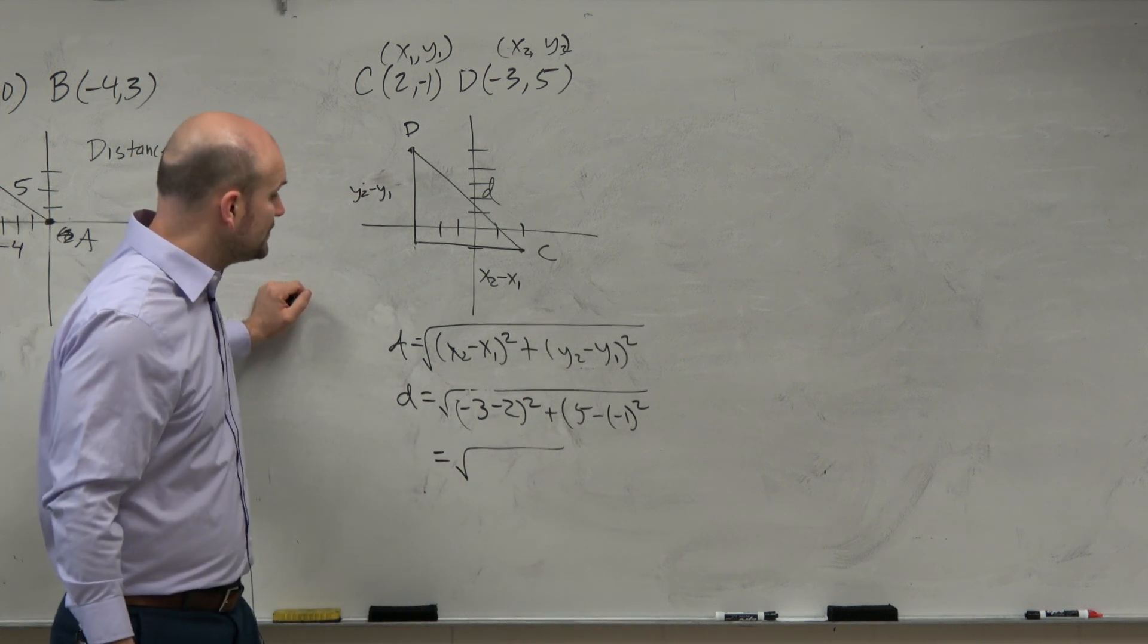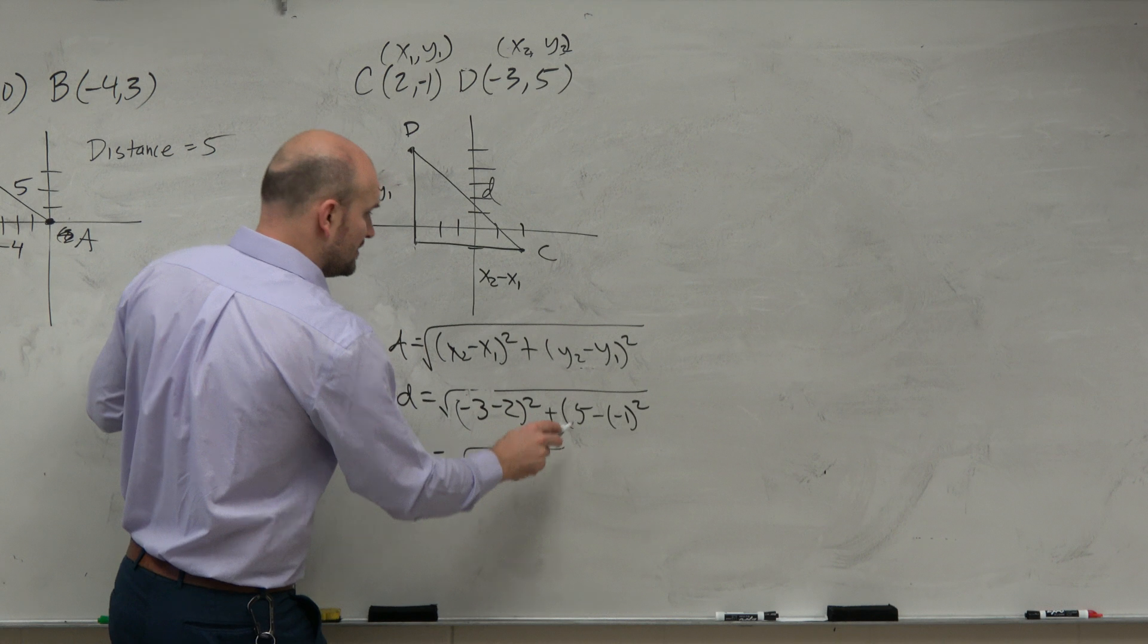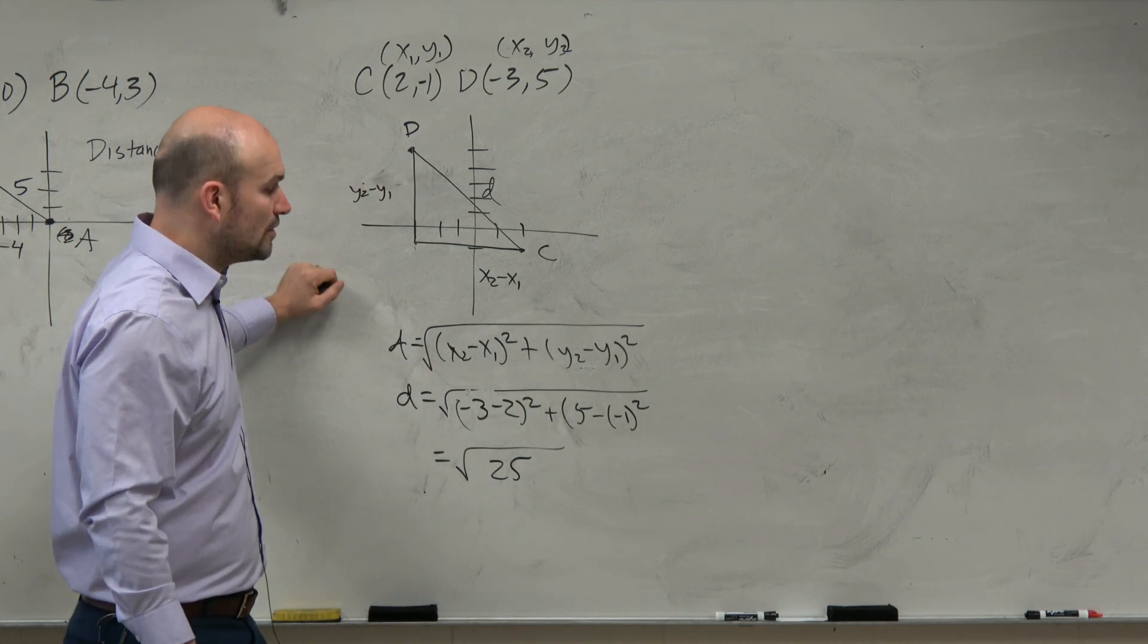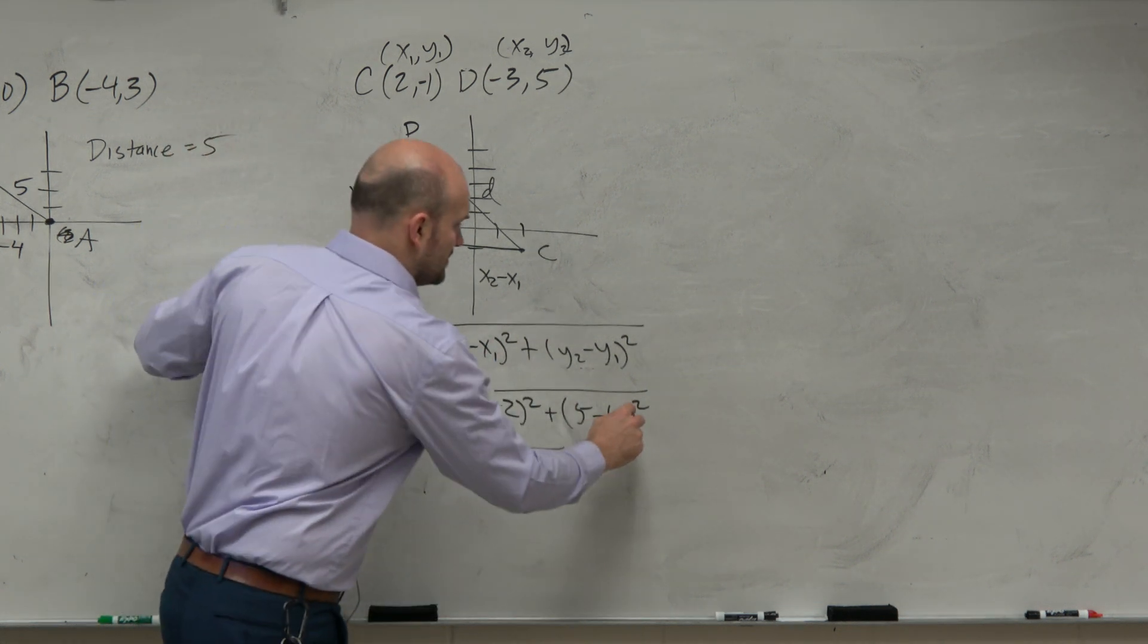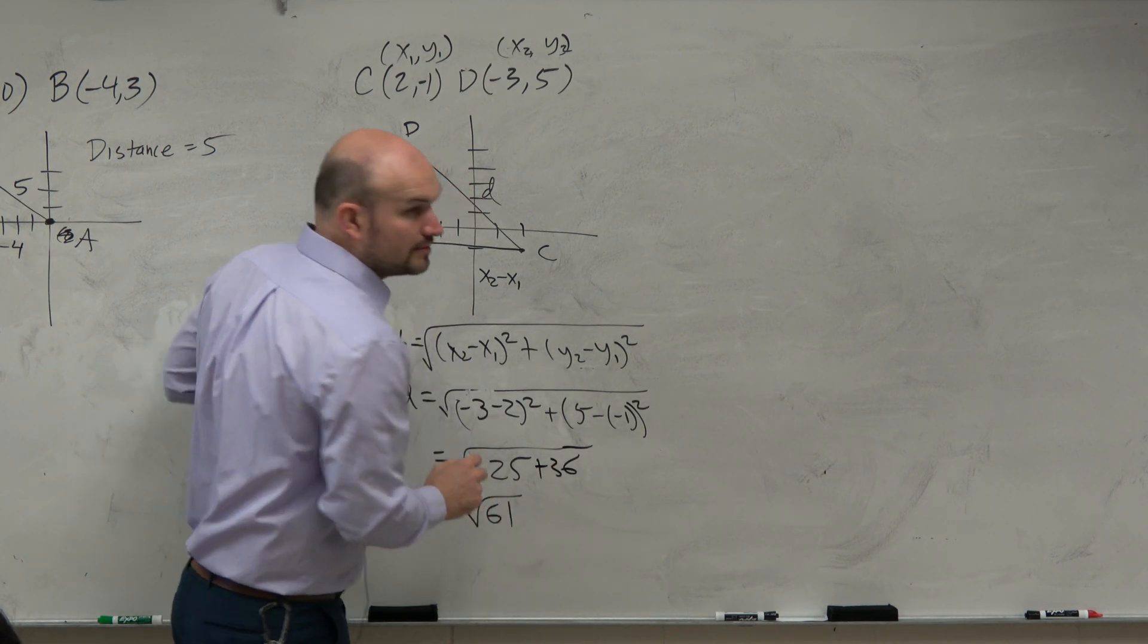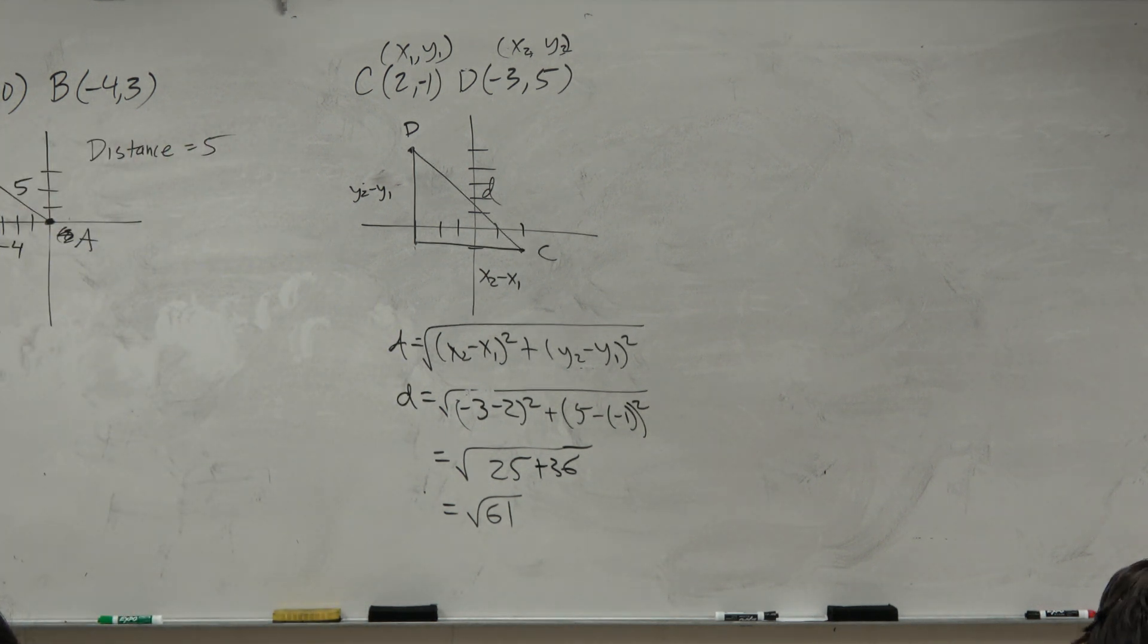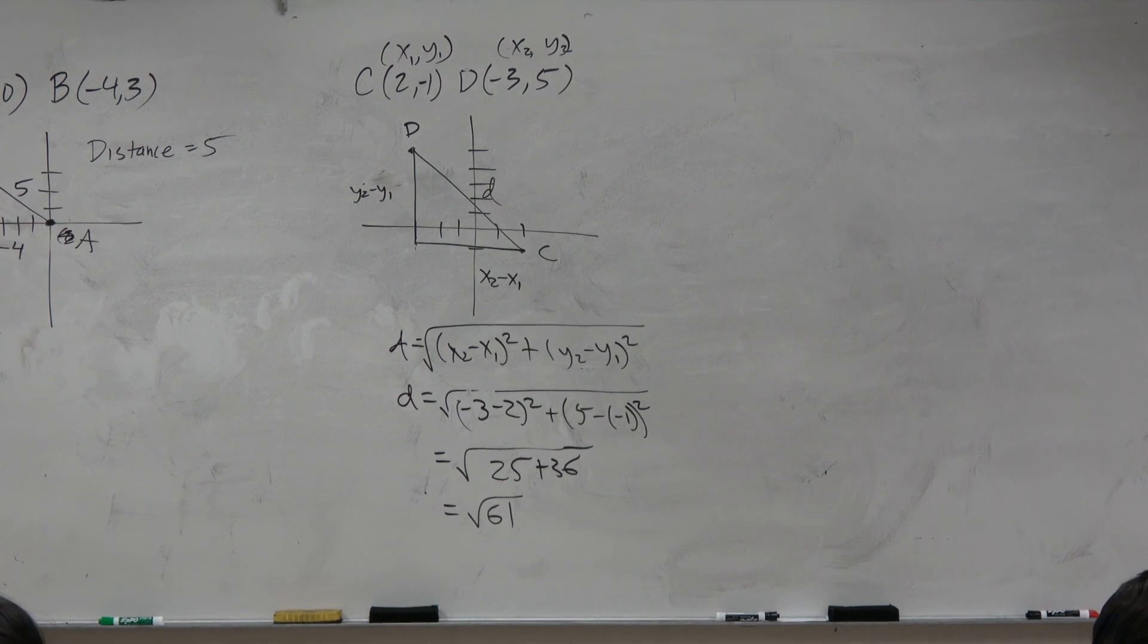So negative 3 minus 2, you owe me $3. You borrow two more. That's a negative 5. Negative 5 squared is 25. And then 5 minus a negative 1 is going to be 6. 6 squared is 36. And therefore, we get the square root of 61. Right? So again, I did it a little bit longer way, but I'm doing that on purpose. Obviously, you could have just easily counted those sides and then squared them and added them together.